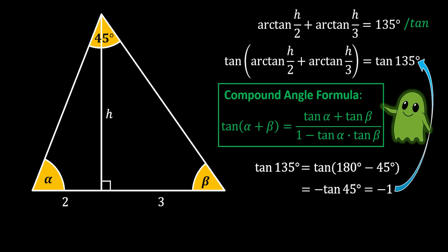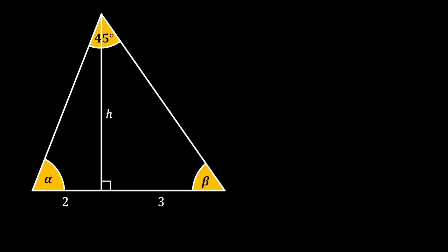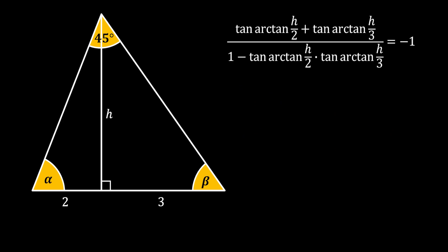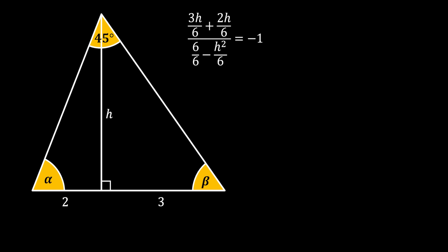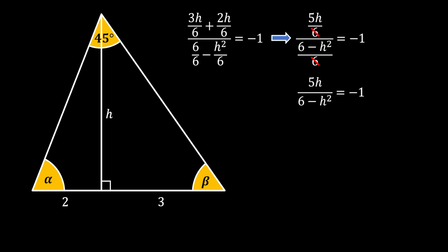On the left side, we apply the compound angle formula: tan(α + β) = (tan α + tan β) / (1 − tan α · tan β). Substituting alpha = arctan(H/2) and beta = arctan(H/3), the tangent and arctangent cancel each other out, leaving a clean equation. Expanding the numerator and simplifying the denominator — canceling the factor of 6 in both — then multiplying by −1 and rearranging terms, we arrive at a nice quadratic equation.